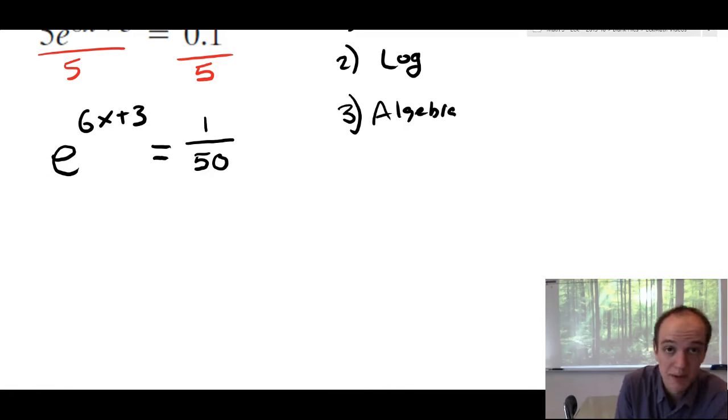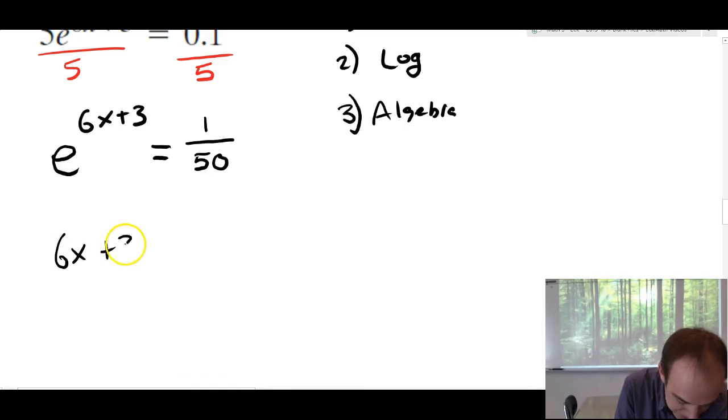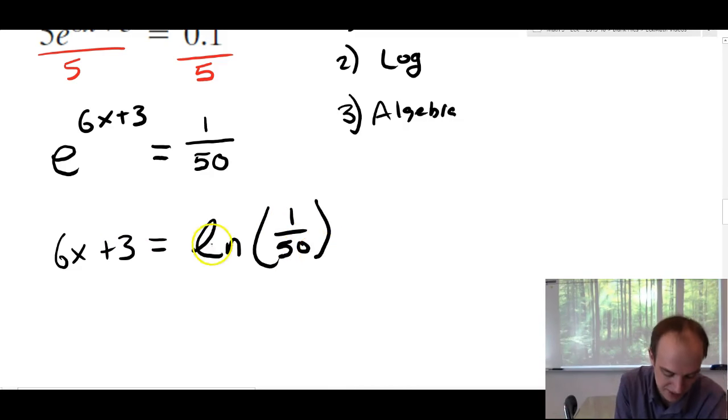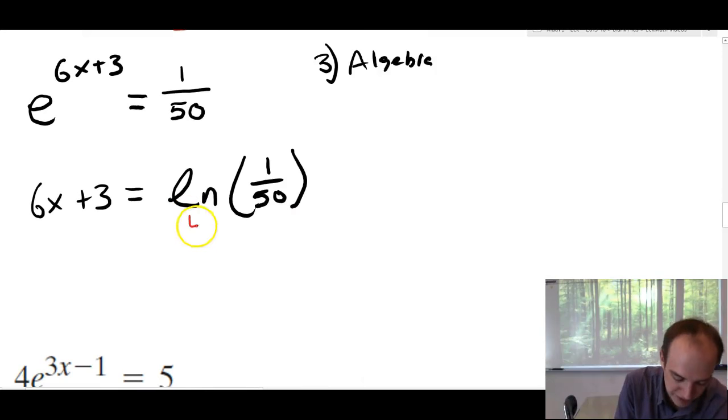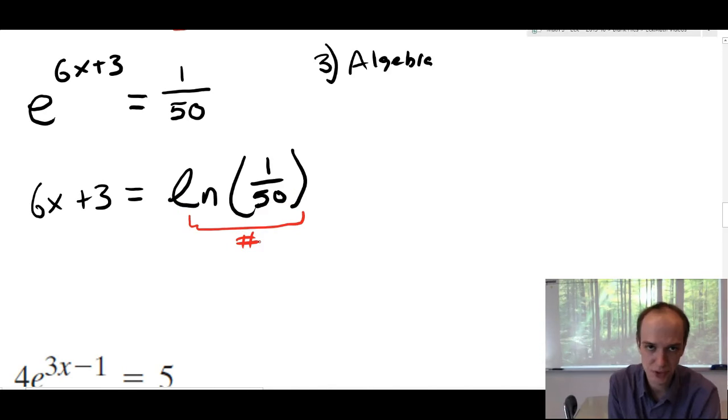Now, I've got E alone. This is where I'm going to convert to natural log form. So, I'm going to have 6x plus 3 is the same as the natural log of 1 over 50. So, I'm converting to natural log form. This is log base E, if you're not confident in what's going on here. Natural log of 1/50 is just a number. It looks gross, it's just a number. We'll put it in our calculator, but only at the very end of the problem.